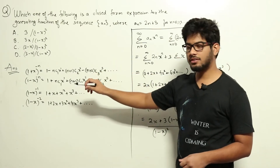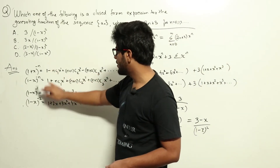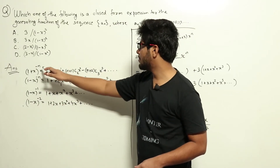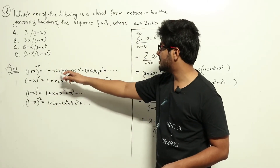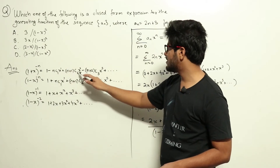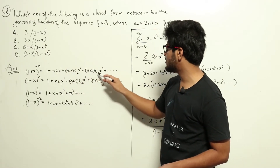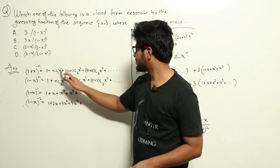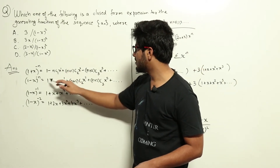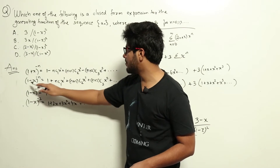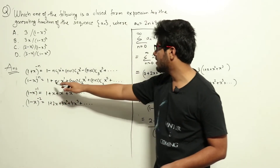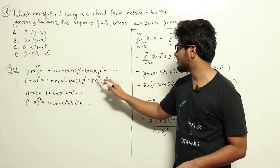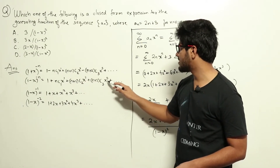To answer this question you need to know the binomial expansion. So: (1+x)^{-n} = 1 - nC1·x + (n+1)C2·x² - (n+2)C3·x³ + ... Substituting x with -x gives (1-x)^{-n} = 1 + nC1·x + (n+1)C2·x² + (n+2)C3·x³ + ...